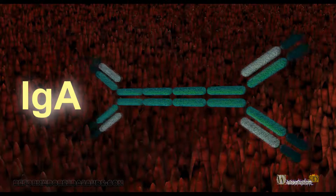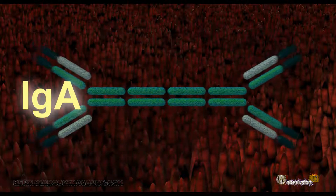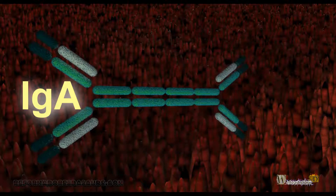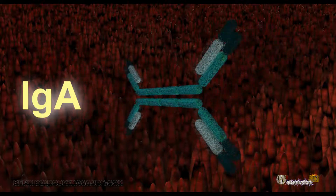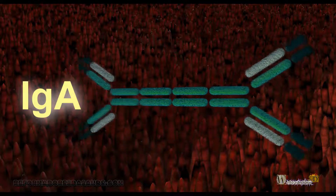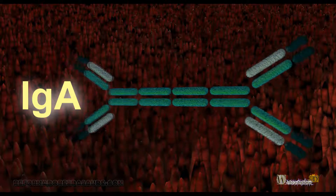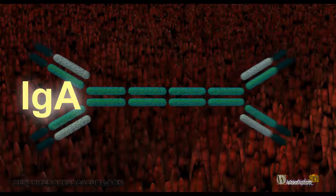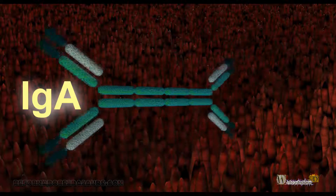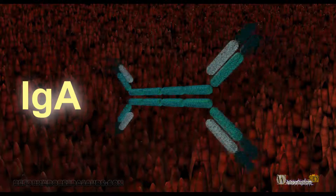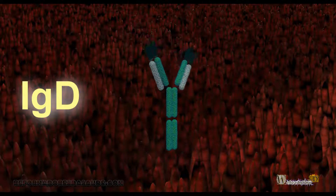Dimeric IgA antibodies are the main class secreted by the mucosal lymphoid tissues. IgA causes antibody-dependent cell-mediated cytotoxicity, degranulation of eosinophils and basophils, phagocytosis by monocytes, macrophages and neutrophils, and triggering of respiratory burst activity by polymorphonuclear leukocytes. IgD antibodies are found as surface immunoglobulins on mature B lymphocytes, but their function is unknown.